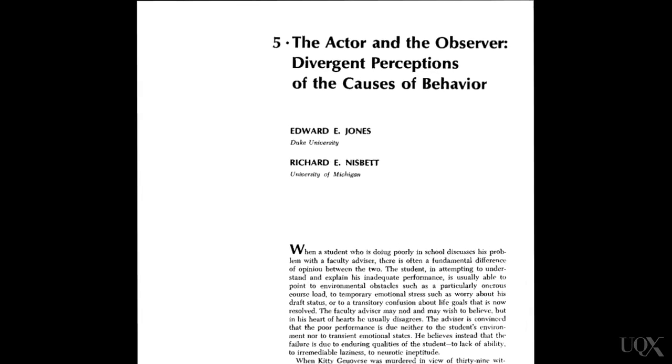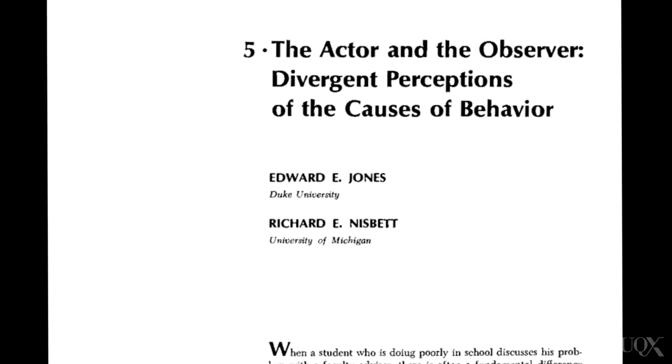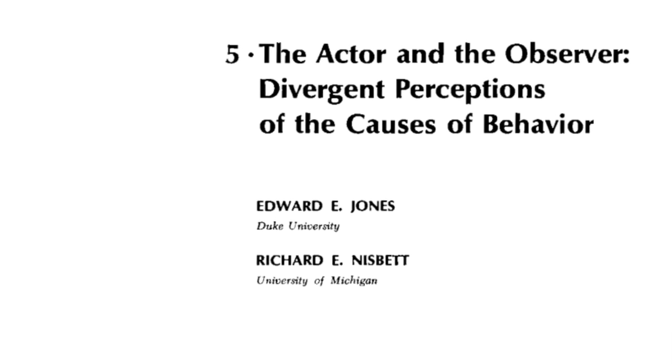Do we explain our own behaviours in the same way as we explain other people's behaviours? It seems that we don't. The actor-observer bias describes the difference in how we think about our own behaviours compared to the behaviours of others. Jones and Nisbet hypothesised that we tend to attribute our own behaviours to external factors and others' behaviours to internal causes. Some people see this bias as being related to the fundamental attribution error, but it is subtly different. The fundamental attribution error explains how people infer dispositional attributions from the behaviour of others, whereas the actor-observer bias is about what people see as the cause of their own versus others' behaviour.